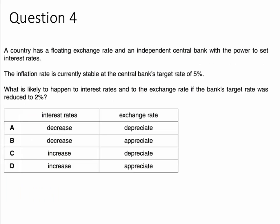Here's question four. A country has a floating exchange rate and an independent central bank. The inflation rate is currently stable at the bank's target rate of 5%. What is likely to happen to interest rates and to the exchange rate if the central bank is given a new inflation target of only 2%?